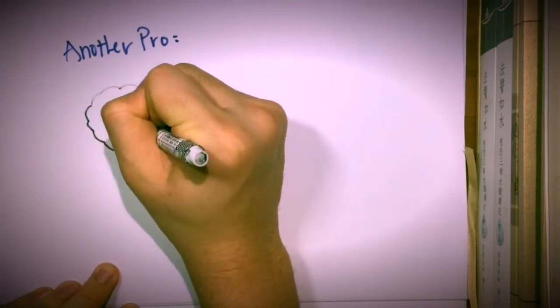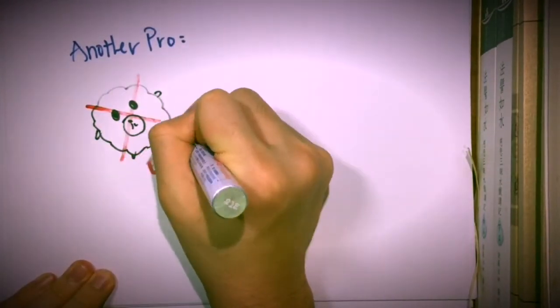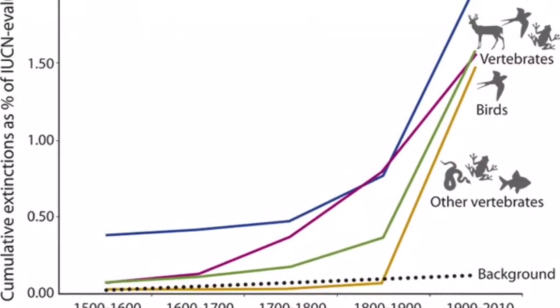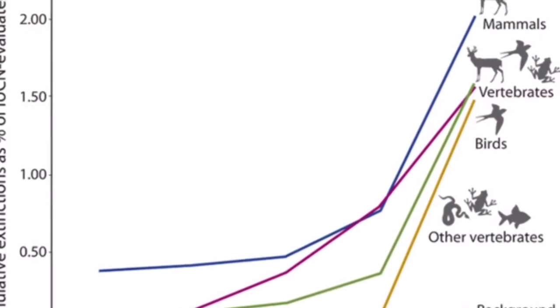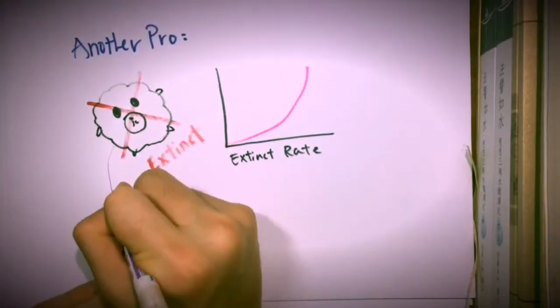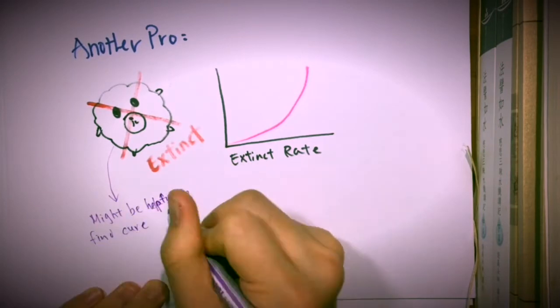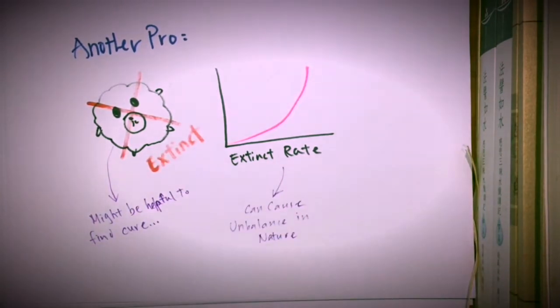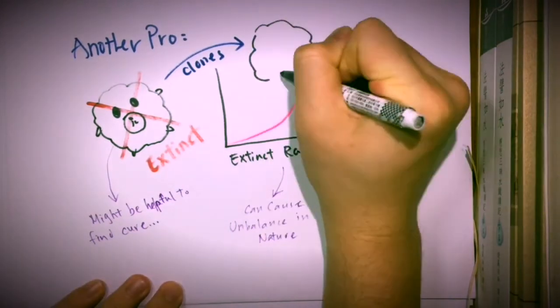Another advantage is lowering the extinction rate. As in the graph, the extinction rate is going out of control. Cloning can not only reduce extinction rate, cloning can even bring back animals which can be quite helpful for finding cures for current diseases and prevent extinct animals from deserting their ecosystem.